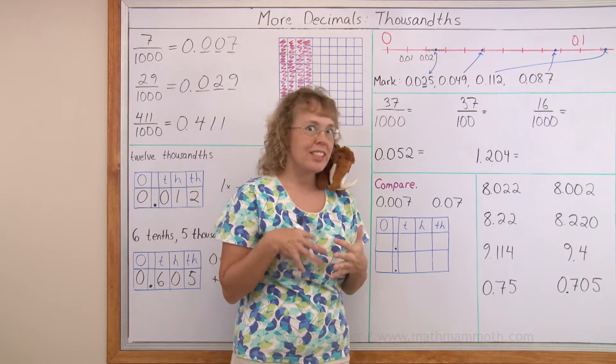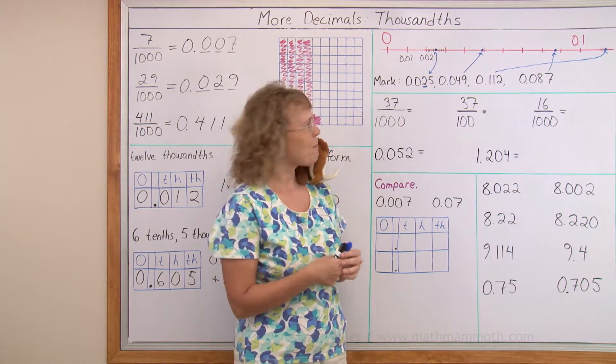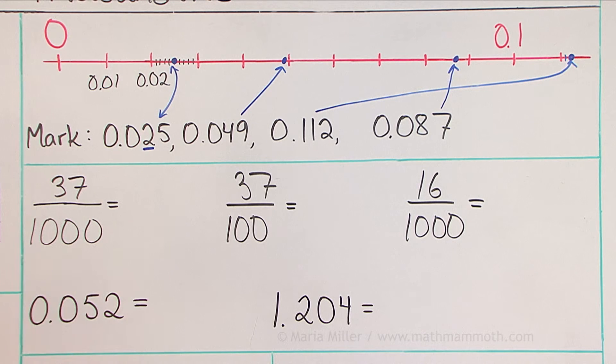Next we are going to write some fractions as decimals and vice versa. 37 thousandths, you should be able to tell by now. You need three decimal digits, so you need to put 37 right there.